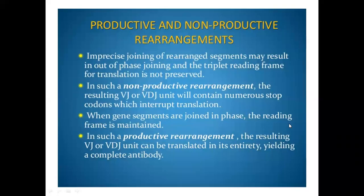Productive and non-productive rearrangement. Imprecise joining of rearranged DNA segments may result in out-of-frame joining, where the triplet reading frame for translation is not preserved. The imprecise joining of segments results in out-of-frame joining, and the rearrangement results in non-productive products. This is known as non-productive rearrangement.